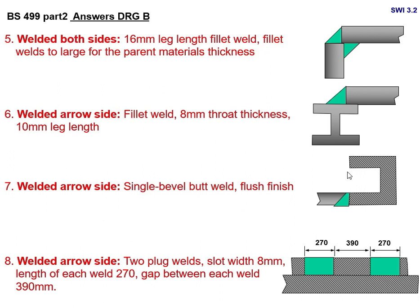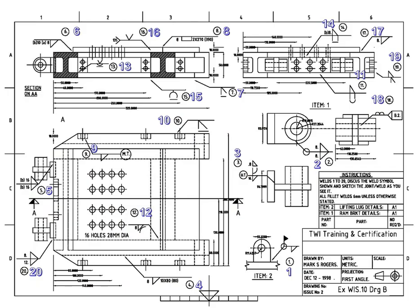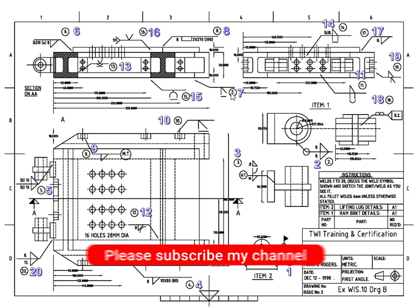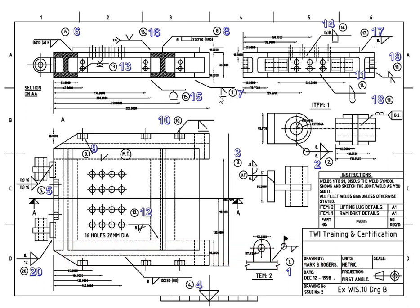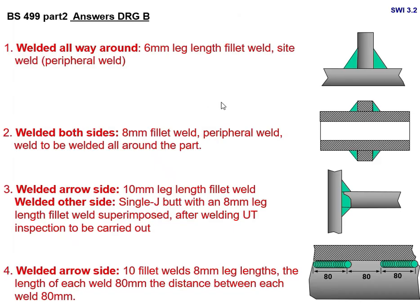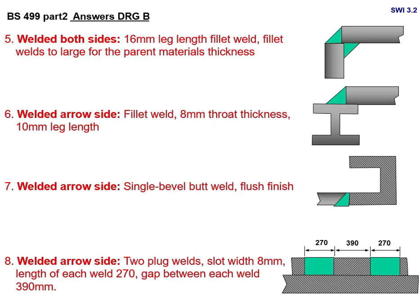Joint number 7 shows a single bevel with a flush/flat finish symbol. They are grinding the reinforcement flush. You write: welded arrow side — single bevel butt weld, flush finish. That is the joint configuration, and you sketch this type of drawing.